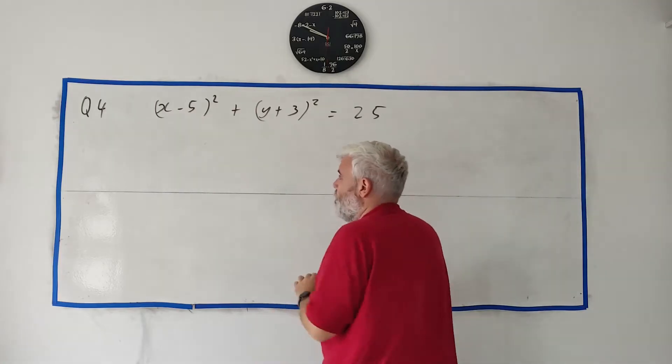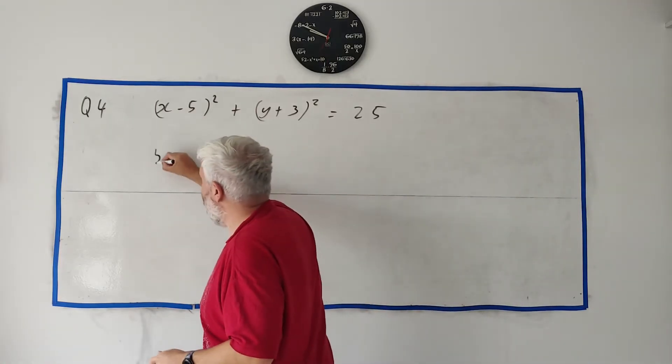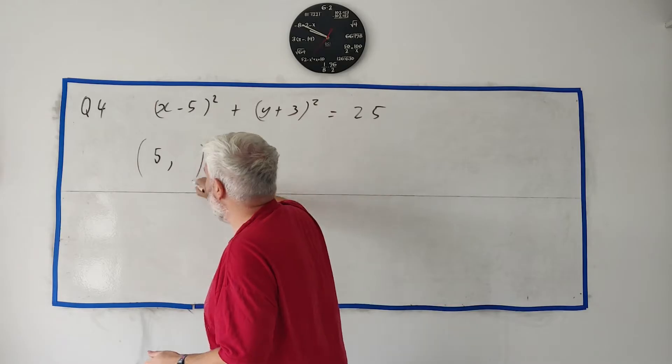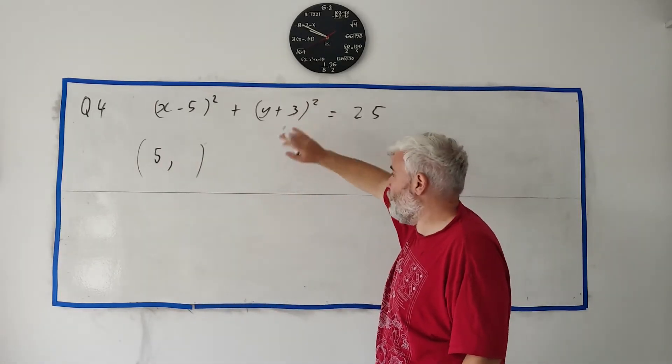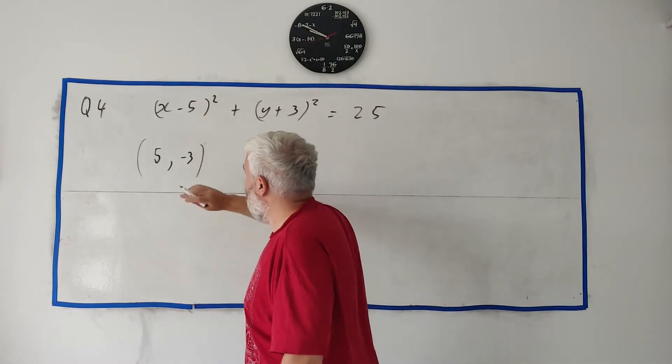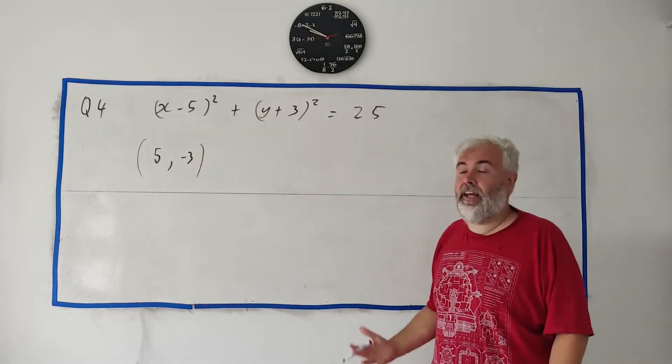Minus this number, so minus minus 5 is a 5. That's the x part of the center. Minus this number, minus plus 3 is minus 3. And boom we have the answer, we have the center of the circle.